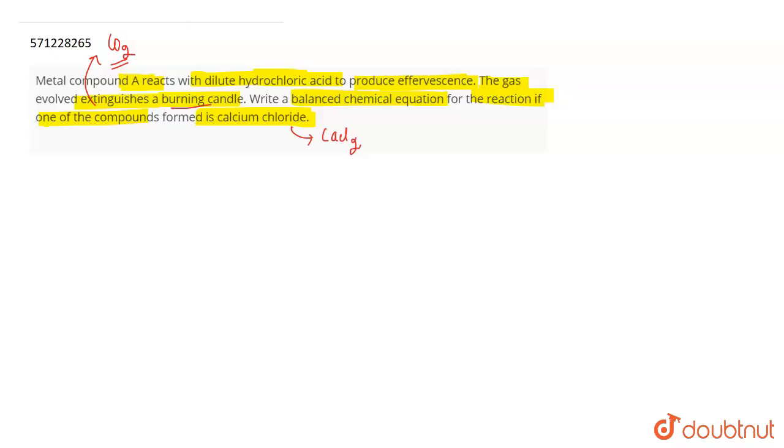From here, we know that the gas evolved is carbon dioxide and another product formed is calcium chloride. So from here we can make out that compound A which reacts with hydrochloric acid is nothing but calcium carbonate. The metal compound A is calcium carbonate.